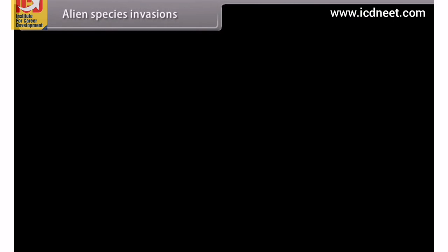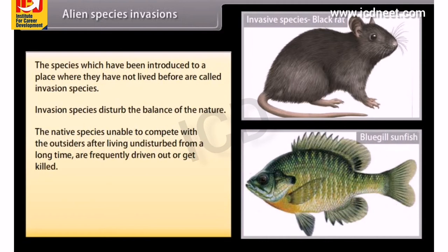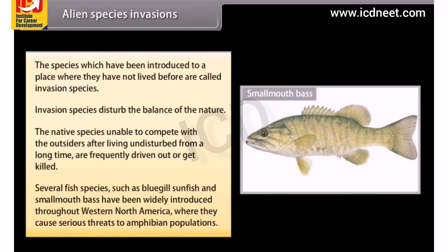Alien species invasions. Species introduced to a place where they have not lived before are called invasive species. Invasive species disturb the balance of nature; native species, unable to compete with outsiders after living undisturbed for a long time, are frequently driven out or killed. Several fish species such as bluegill sunfish and smallmouth bass have been widely introduced throughout western North America, where they cause serious threats to amphibian populations.